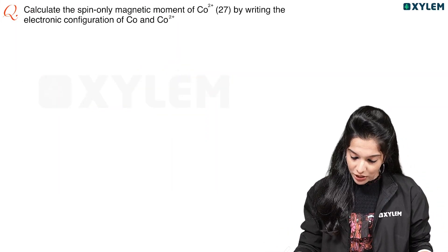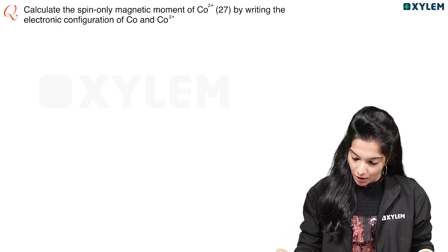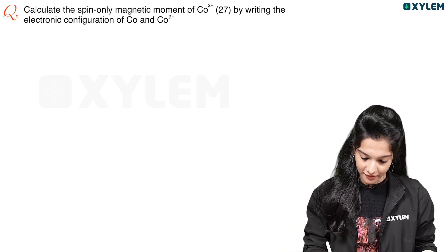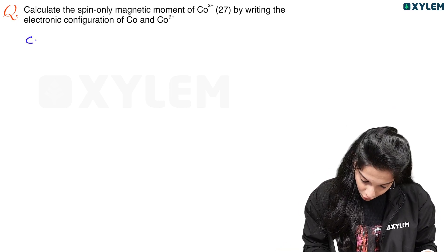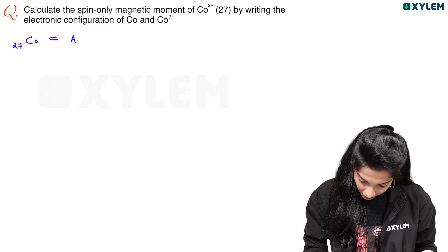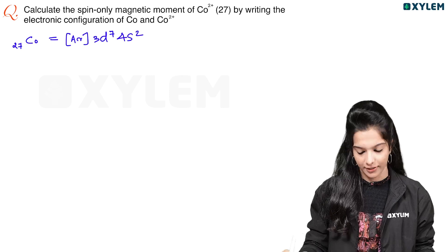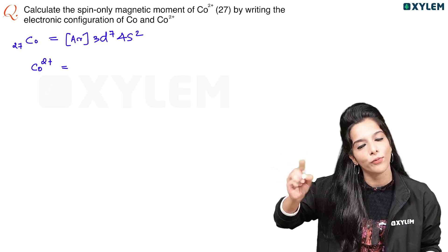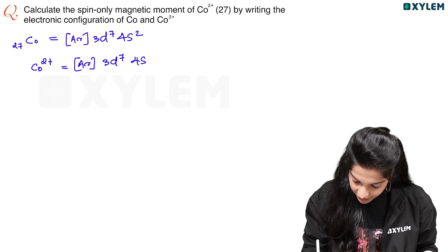Calculate the spin-only magnetic moment of Co2+ (cobalt, atomic number 27) by writing the electronic configuration of cobalt and cobalt 2+ ion. Cobalt 2+ has configuration 3D7, 4S0.